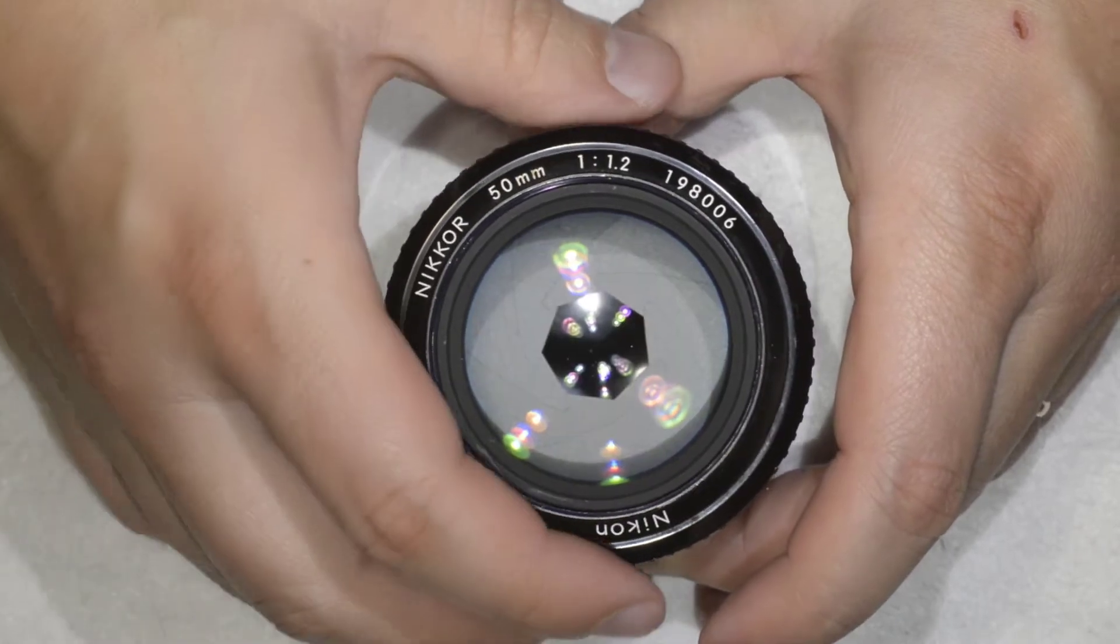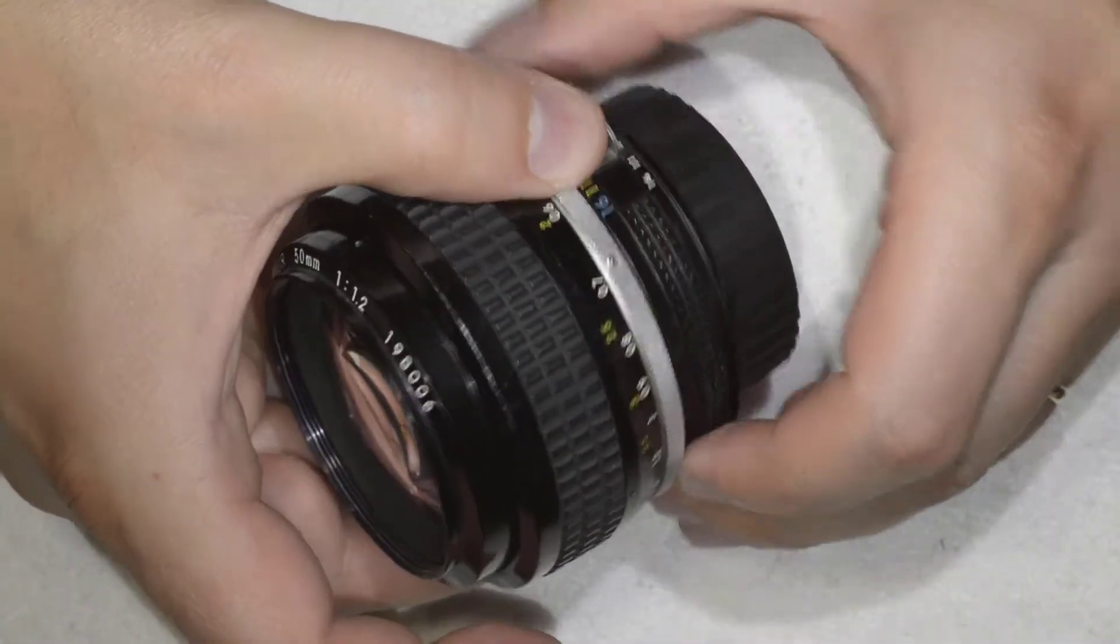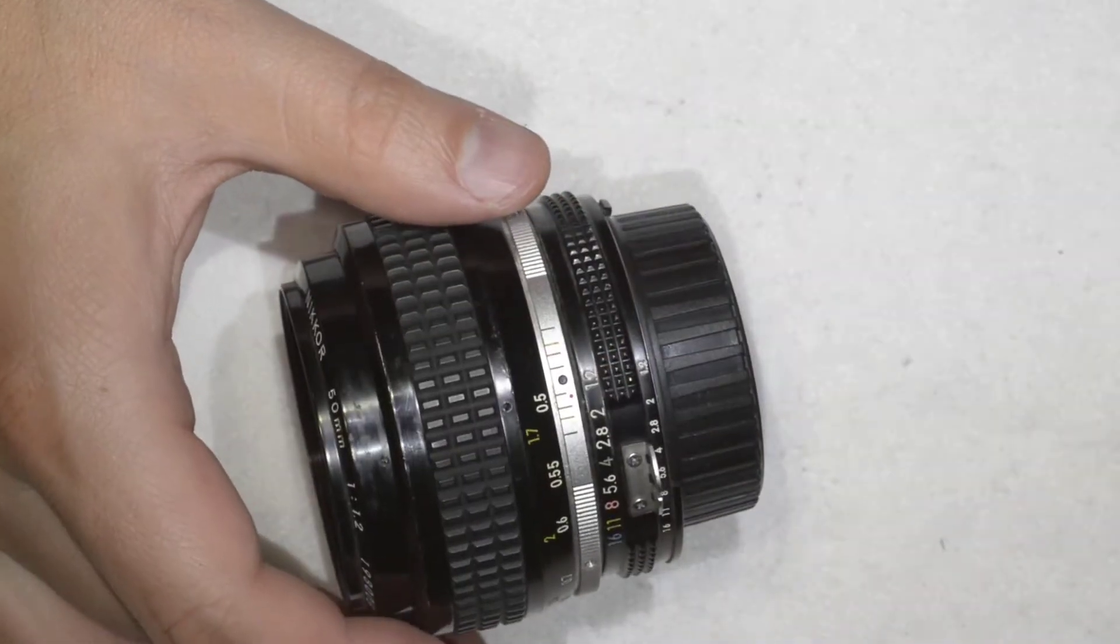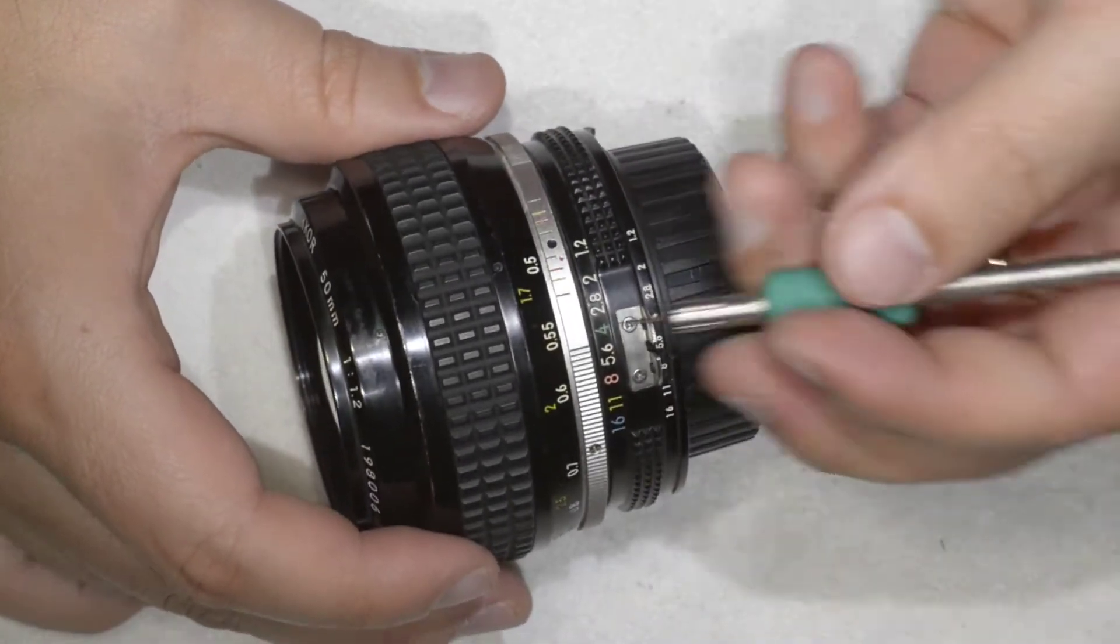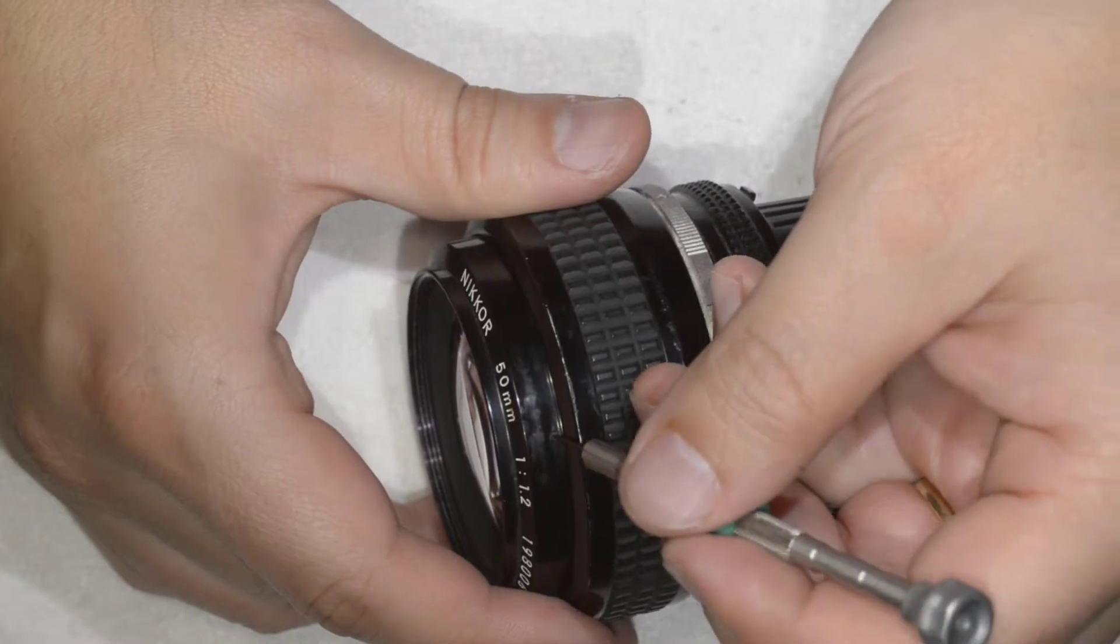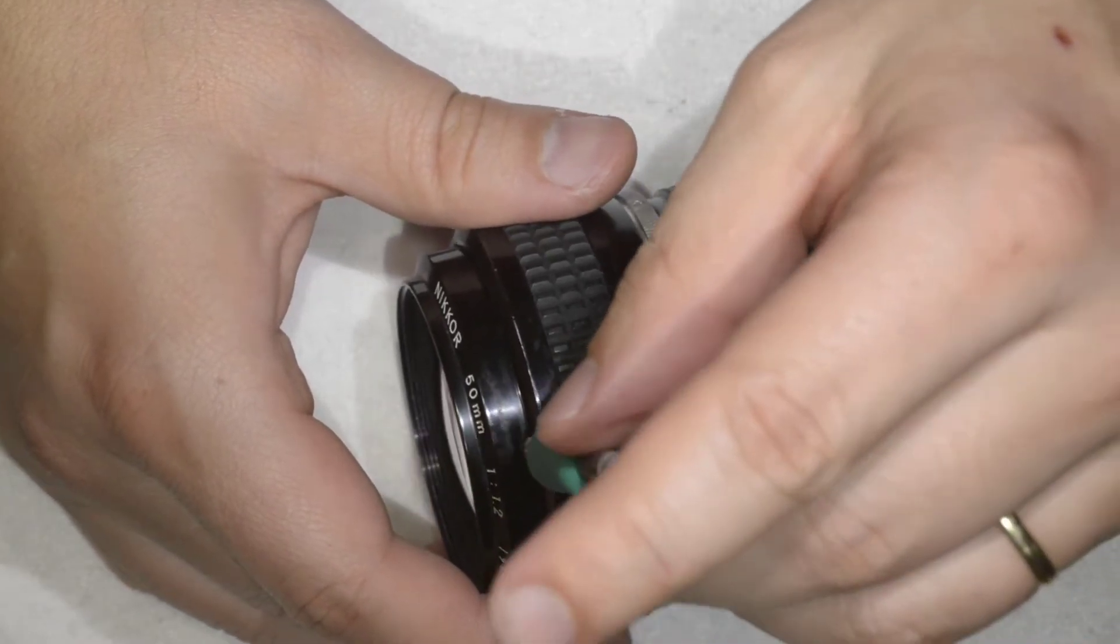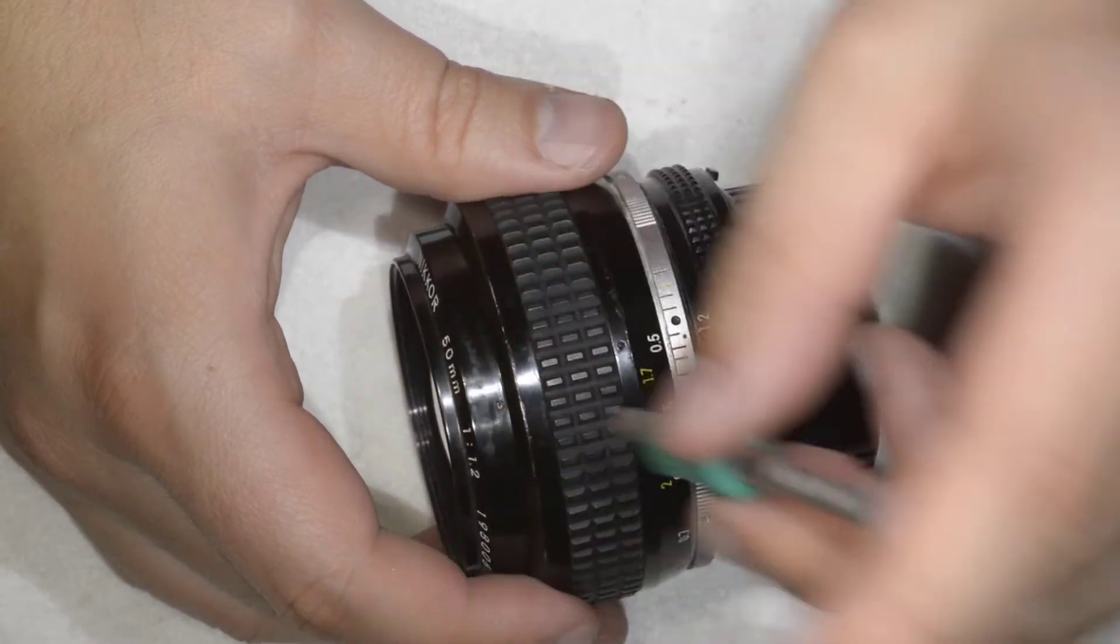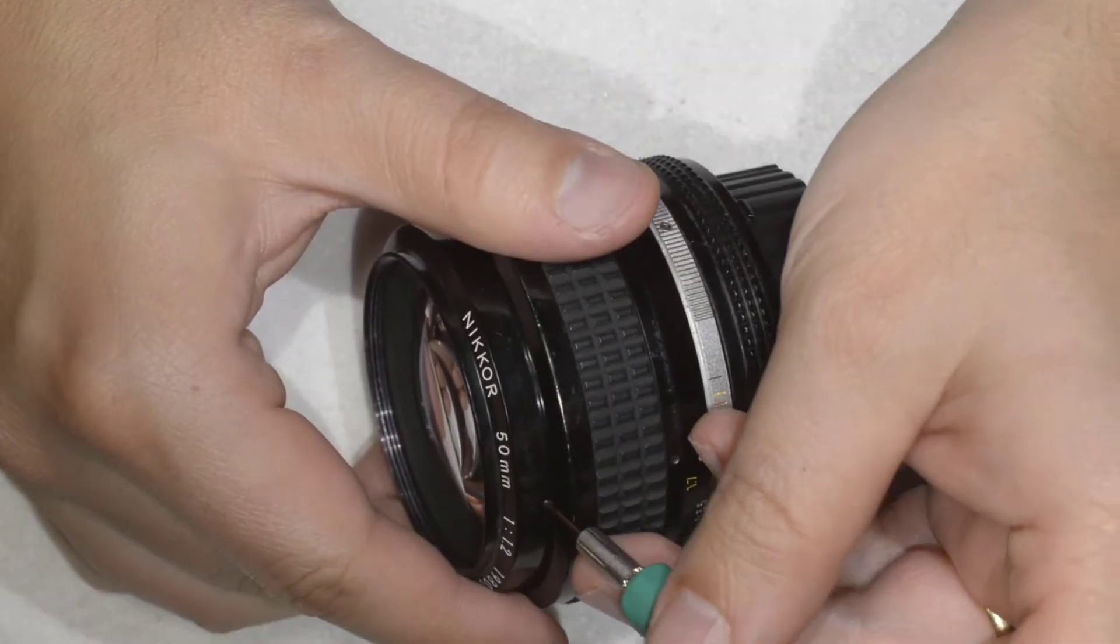So first you go to the lowest focal distance, here, 0.5, and then here you will find a screw that you simply need to get a bit loose. You don't have to remove it.